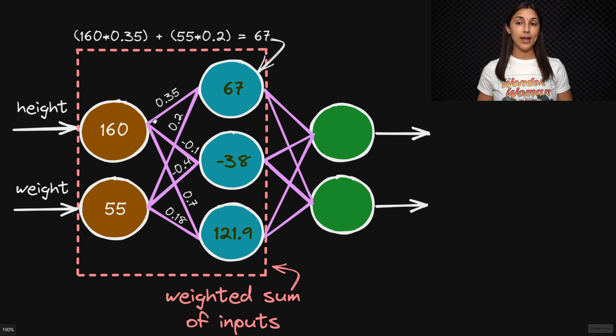And again, these weights are randomly initialized at first. But during the training process, which we'll cover at a later time, the network will learn the optimal value for these weights, which lead to the most accurate predictions from the network.